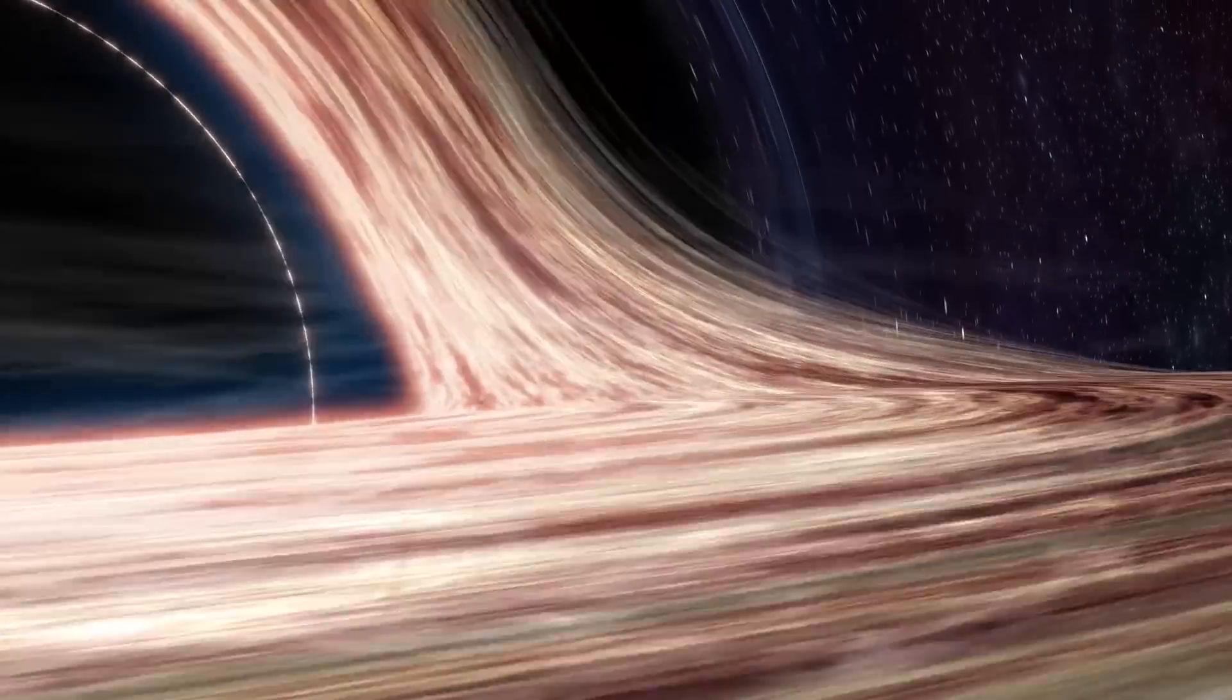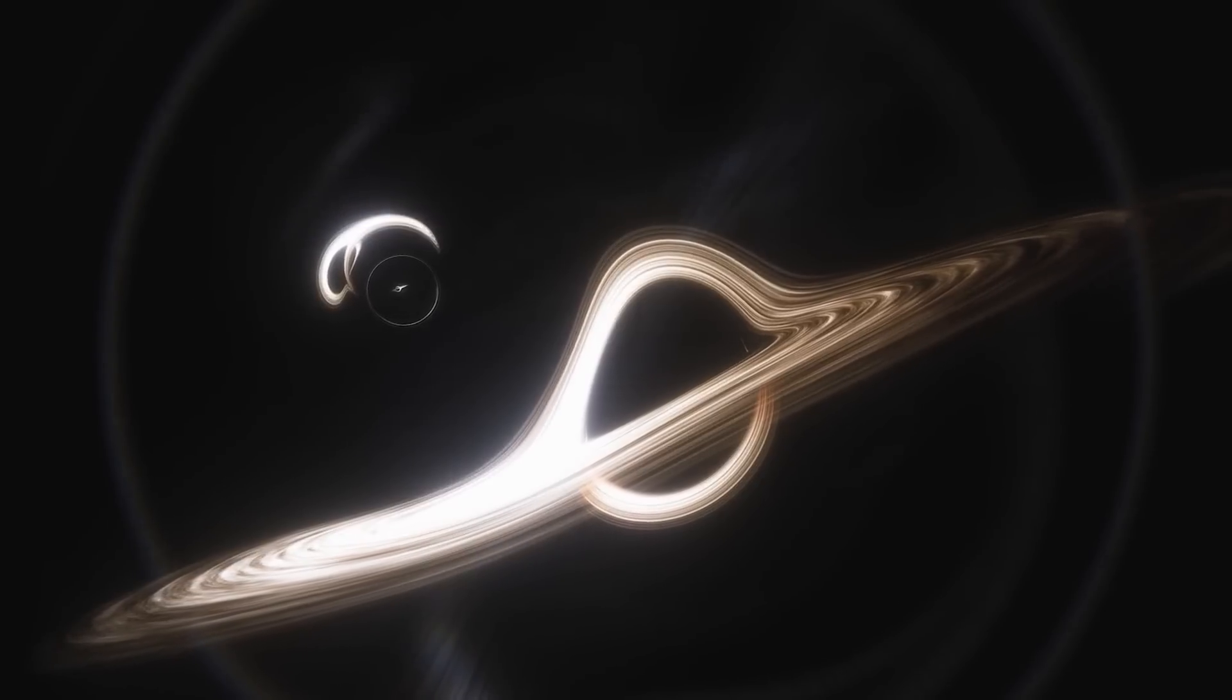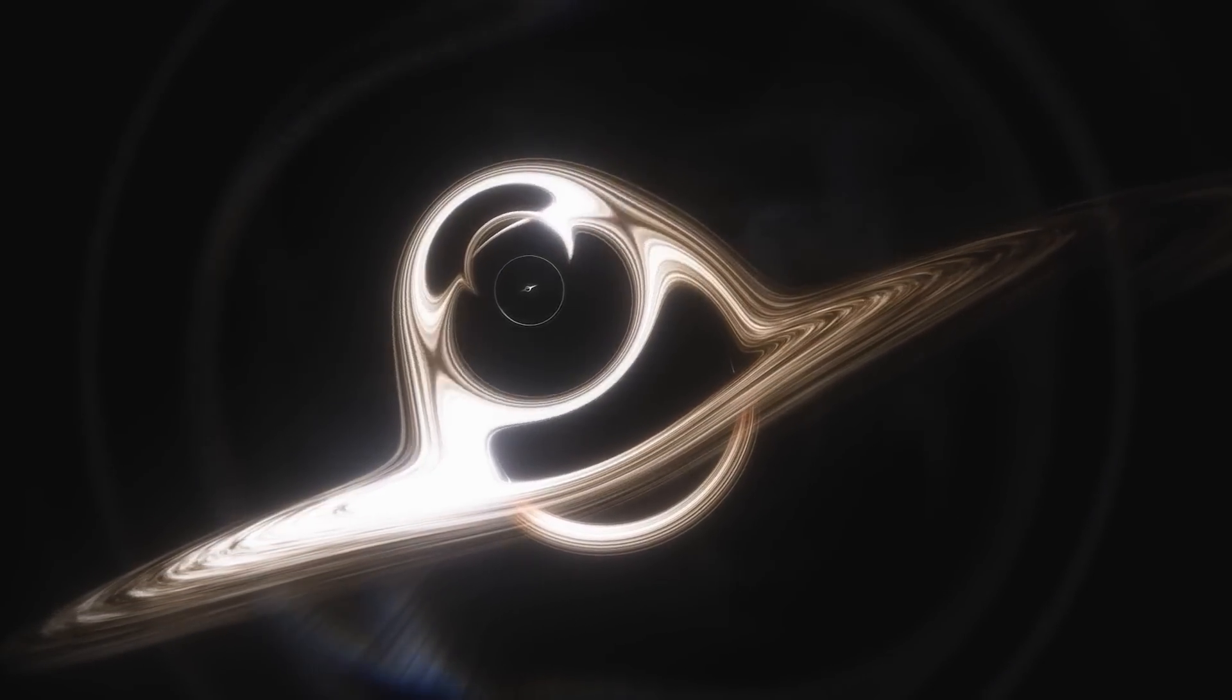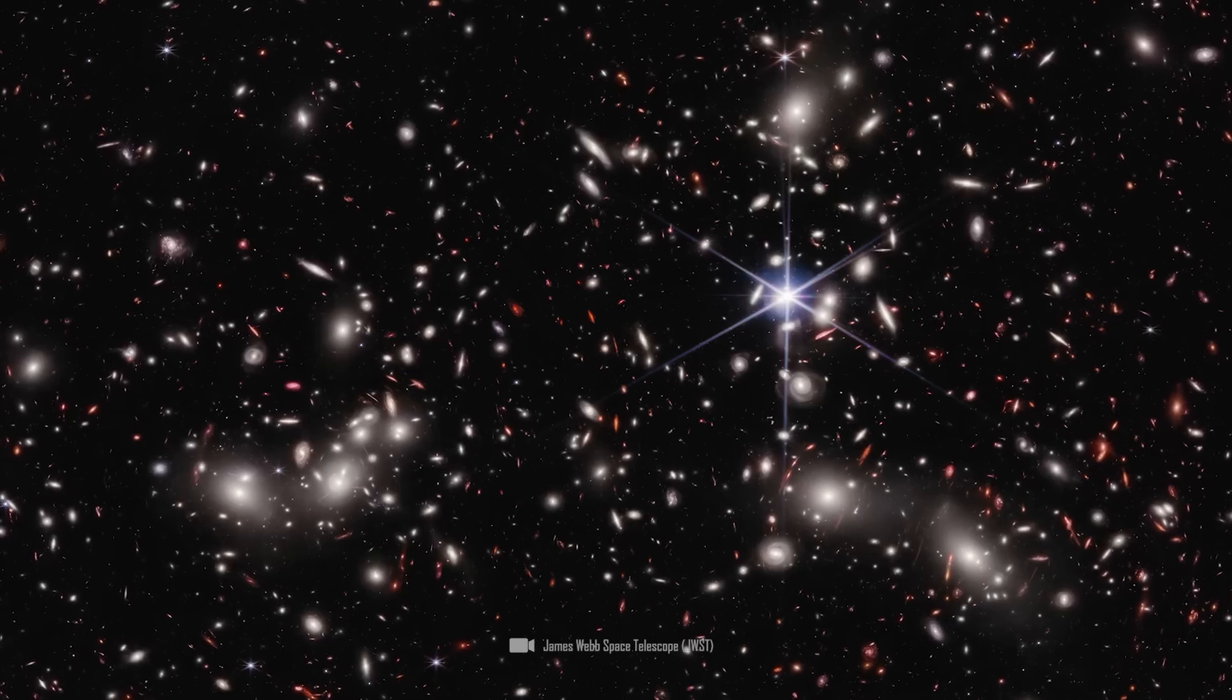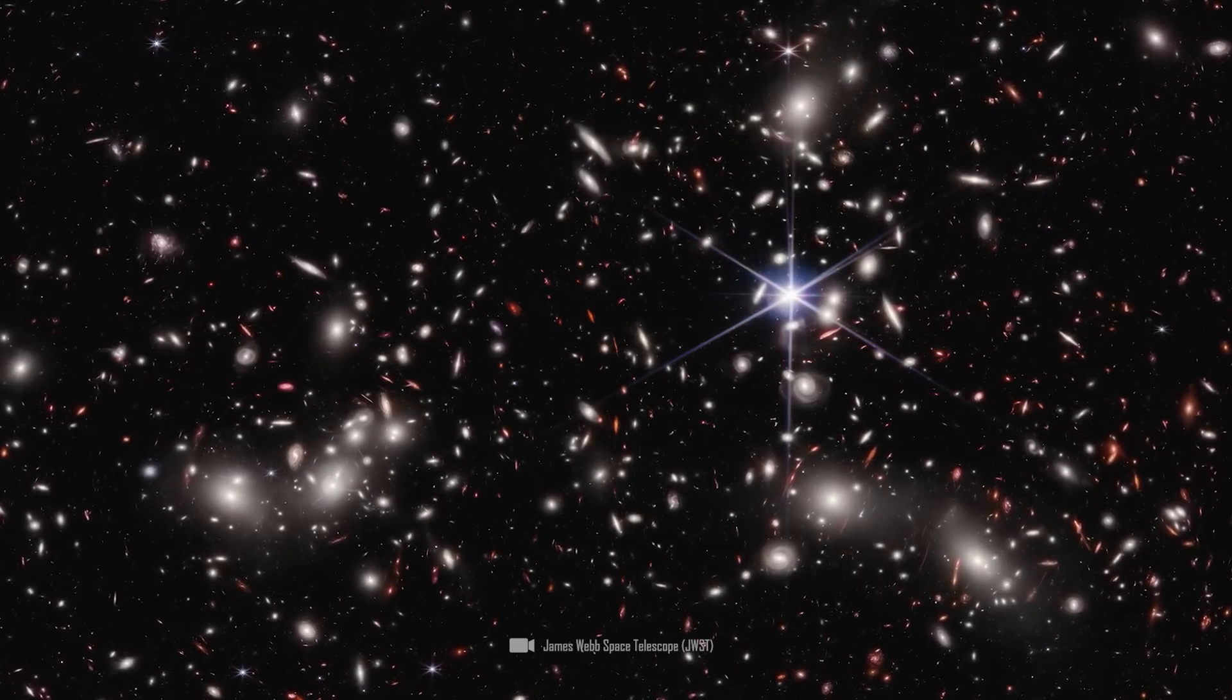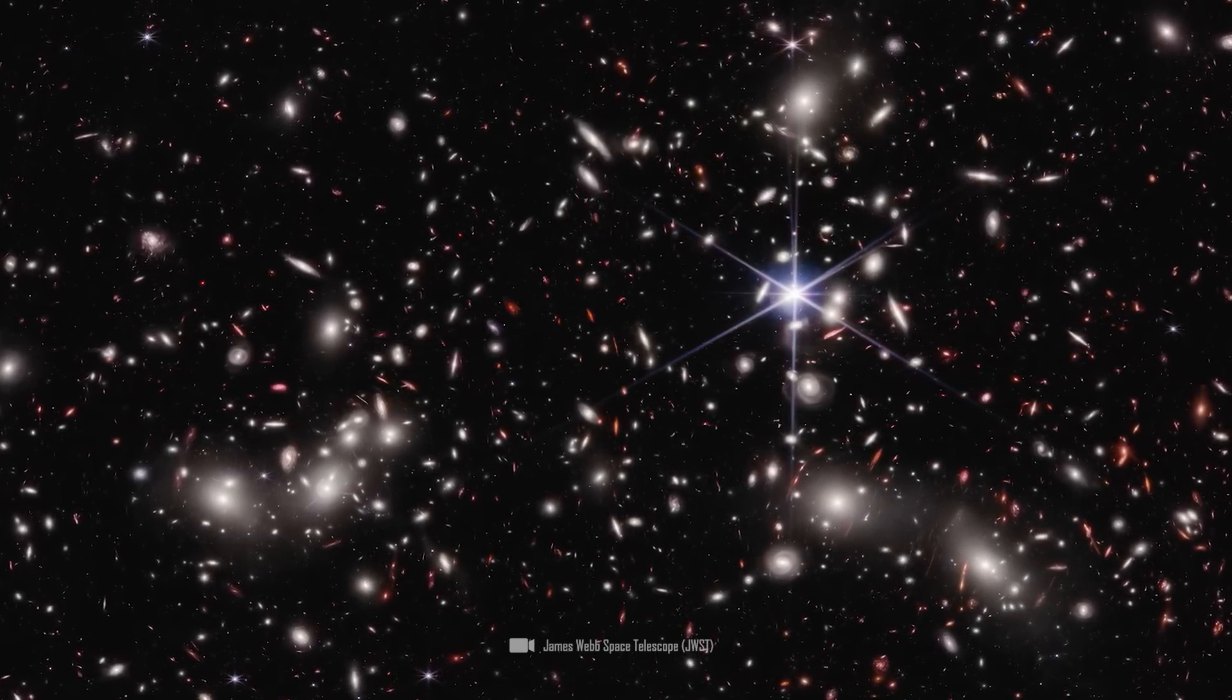Previous theories assume that supermassive black holes are formed by the collapse of massive stars or by the merging of smaller black holes. These processes take billions of years, and so this black hole is also scientifically impossible. What does this discovery now tell us about the old theories and their veracity?